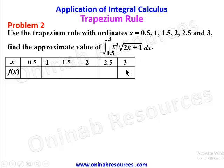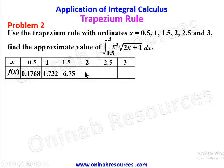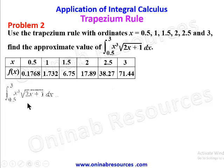We substitute each x value into the function. At x=0.5: f(x)=0.1768. At x=1: f(x)=1.732. At x=1.5: f(x)=6.75. At x=2: f(x)=17.89. At x=2.5: f(x)=38.27. At x=3: f(x)=71.44. Then we go ahead to evaluate using the formula h/2 times [f(x₁) + f(xₙ)] and so on.